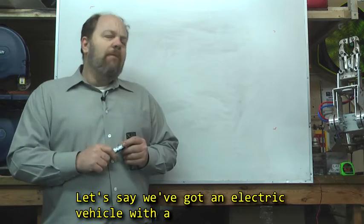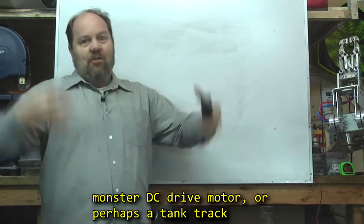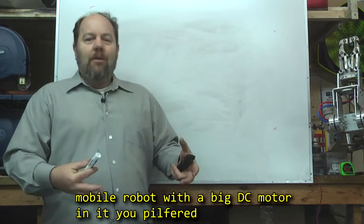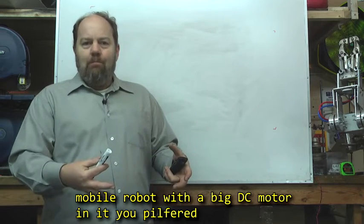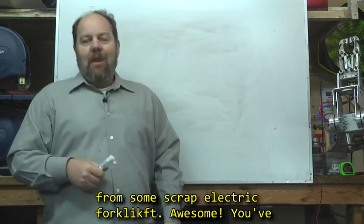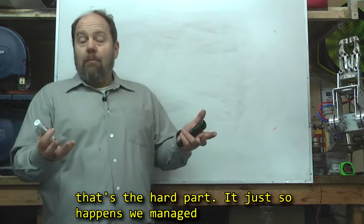Let's say we've got an electric vehicle with a monster DC drive motor, or perhaps a tank track mobile robot with a big DC motor in it you pilfered from some scrap electric forklift. Awesome! You've already built a pulse width modulation circuit, so that's the hard part.